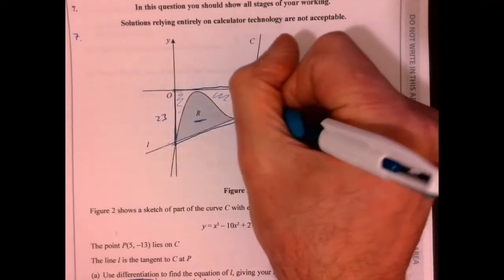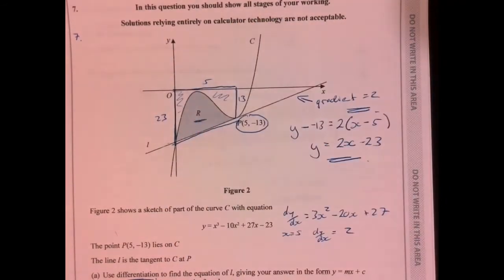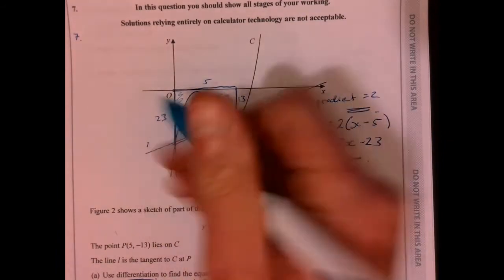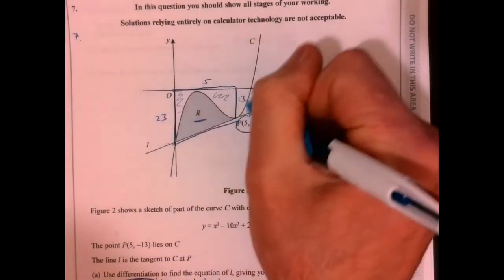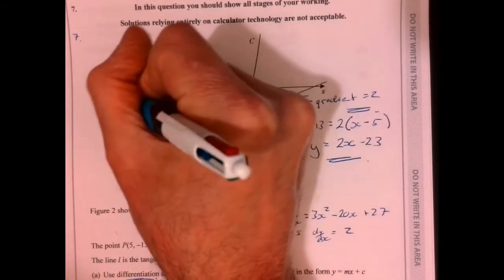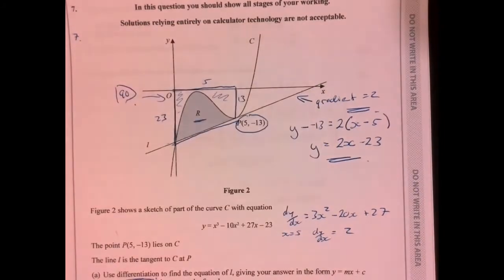First of all, let's just think about this part here. It's just a trapezium. That's 23, that's 13. So just working out the area of a trapezium, that gives me this big section here to be 90.